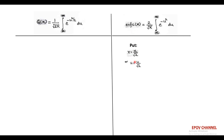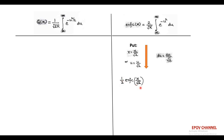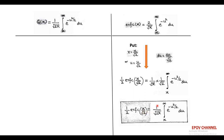For this, we first take the expression of the complementary error function and substitute x = x/√2 on the left side and u = u/√2 on the right side. Differentiating both sides gives du = du/√2, so in place of du we write du/√2. Taking the factor 2 to the left side as 1/2 · erfc(x/√2) and substituting du = du/√2 on the right-hand side, we get 1/2 · erfc(x/√2), which equals the Q-function of x.